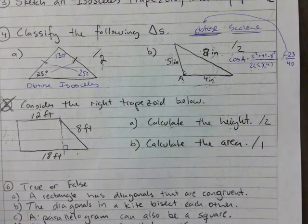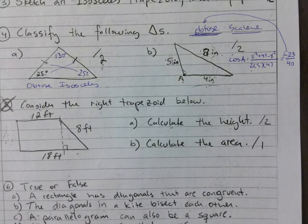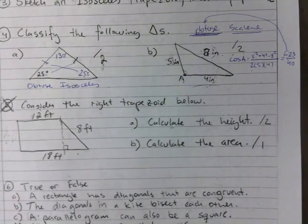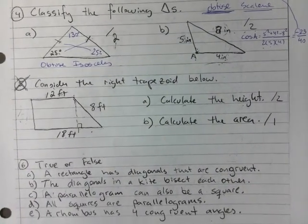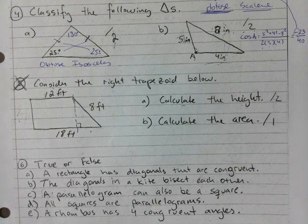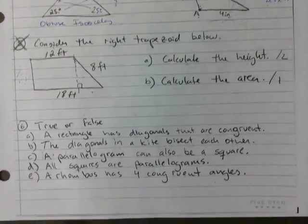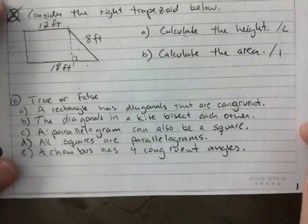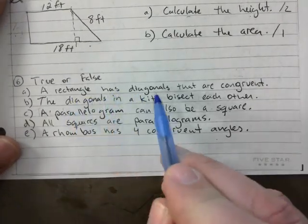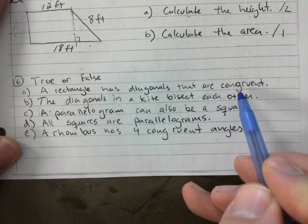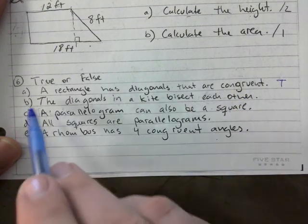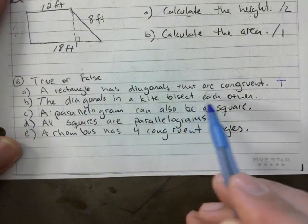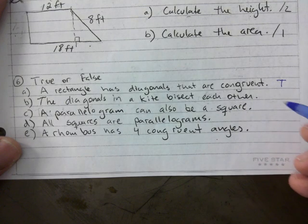Let's do true and false and I'll do the fifth one. 'A rectangle has diagonals that are congruent' — true. 'The diagonals in a kite bisect each other' — false.